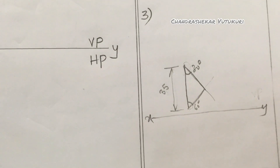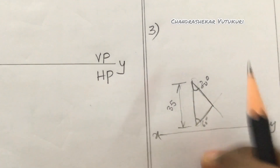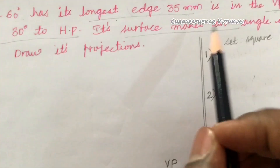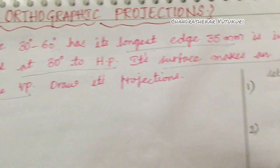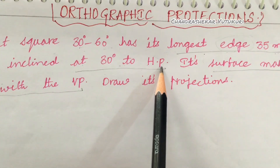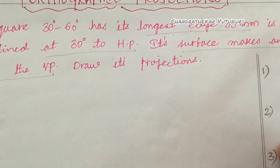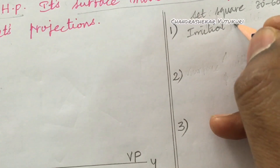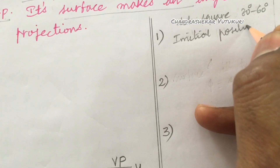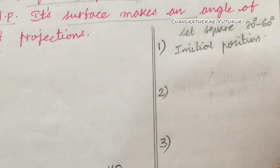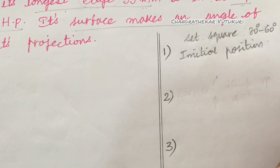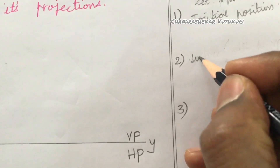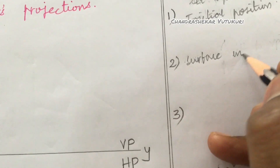This is the initial position of the given problem because the edge 35 mm is in the VP and inclined at 30 degrees to HP. However, we are not supposed to go with edge inclination first. The first thing is to work out the initial position of the given plane, as we have discussed in several problems. The second thing is surface inclination.